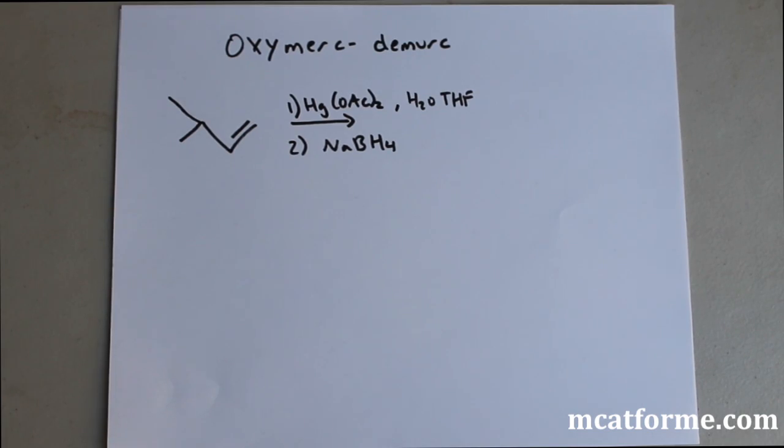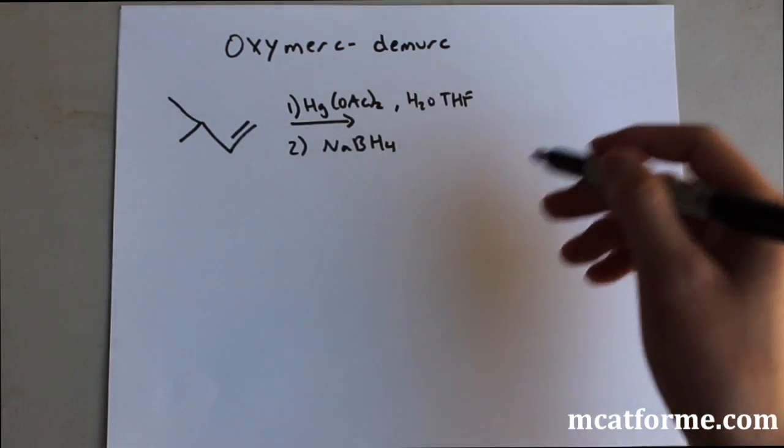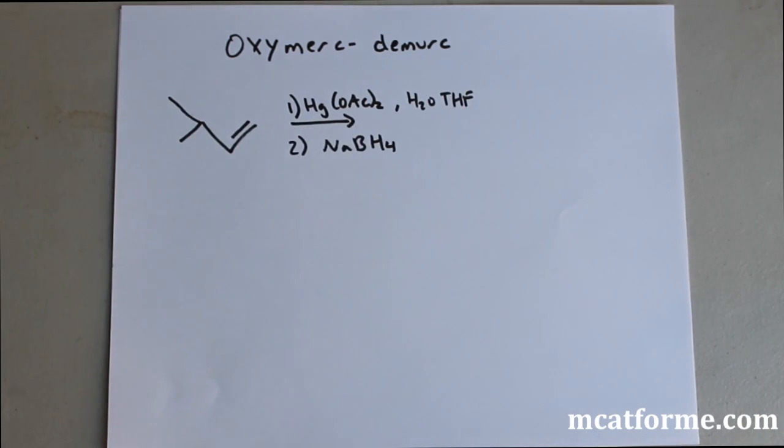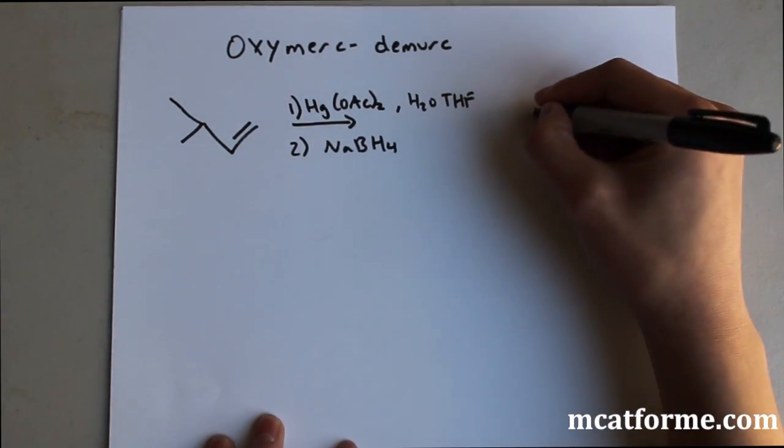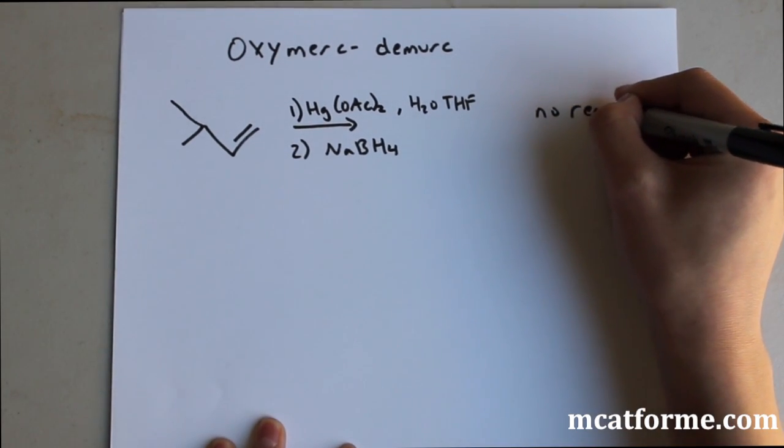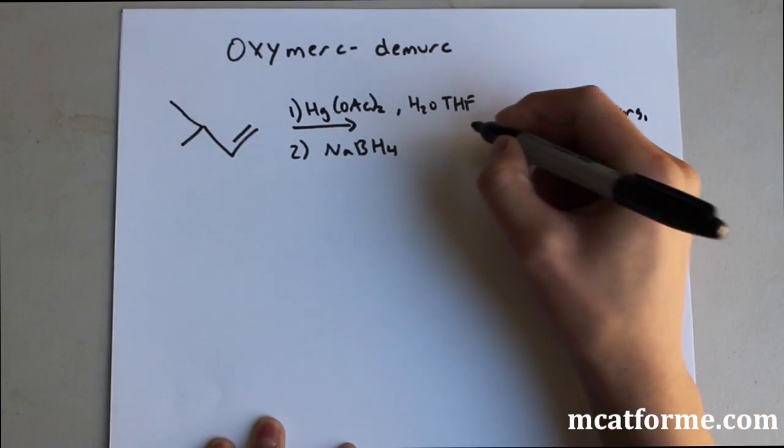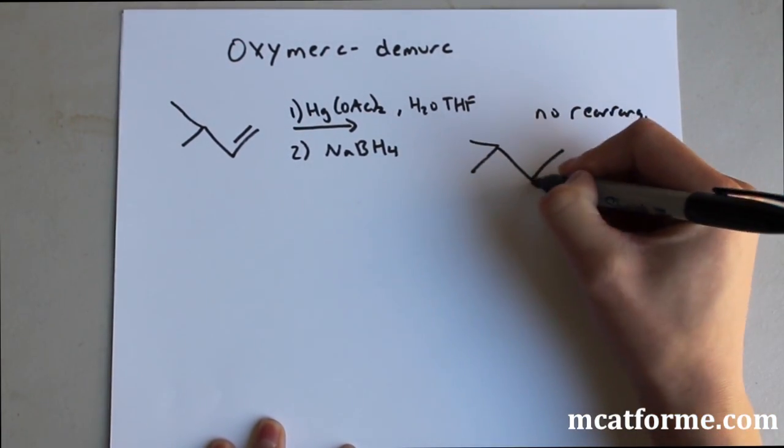So remember before I said that if there was a tertiary carbon we would see a hydride shift and we could have rearrangement so the carbocation will go from the secondary carbon to the tertiary carbon. Well now oxymercuration and demercuration is a reaction where there is no rearrangement. And so our product is going to be simply this.